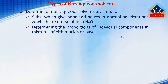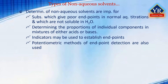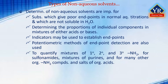Whilst indicators may be used to establish individual endpoints as in traditional acid-base titrations, potentiometric methods of endpoint detection are also used extensively, especially for highly colored solutions. Non-aqueous titrations have been used to quantify mixtures of primary, secondary, and tertiary amines, for studying sulfonamides, mixtures of purines, and for many other organic amino compounds and salts of organic acids.